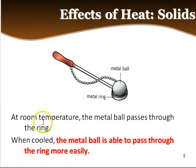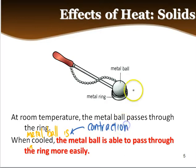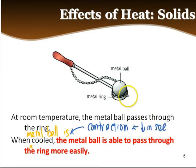Going back to the same example: at room temperature the ball passes through the ring easily. Now when the metal ball is cooled, it is also able to pass through the ring easily. When it cools, contraction occurs — the ball decreases in size. So when the metal ball decreases in size, it passes through more easily.